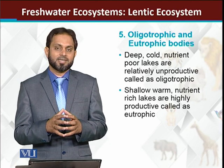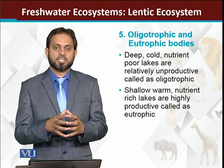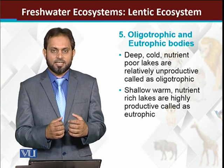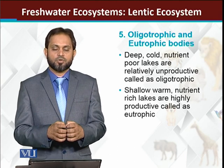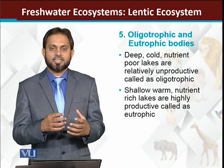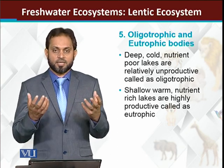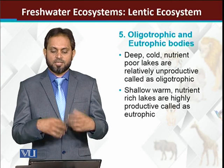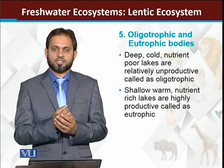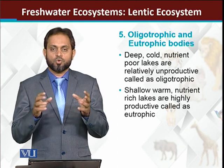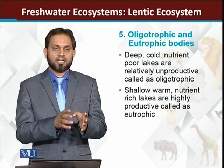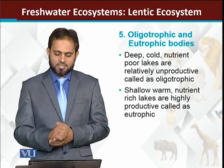Eutrophic water bodies are those which have more supply of nutrients — nutrients are abundant. Because of the abundant nutrients, plants and especially algae will bloom there. Sometimes they grow so much that eutrophication occurs. Eutrophication has a reverse effect: because of eutrophication, animal life cannot survive there.